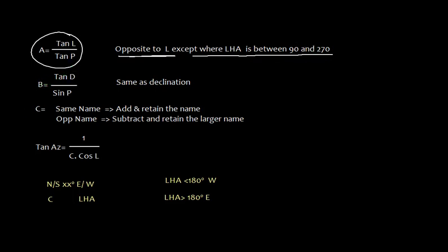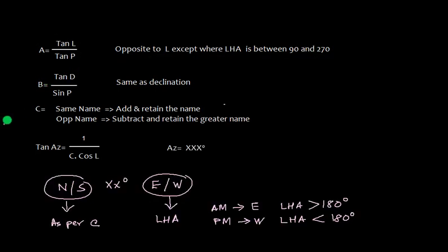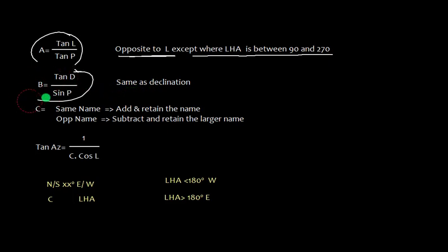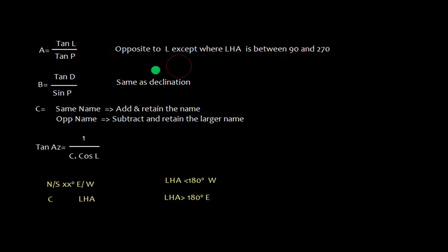Similarly, we need to find factor B. Factor B is equal to tan declination upon sin P. The naming of B is the same as declination. Then we find C from A and B.